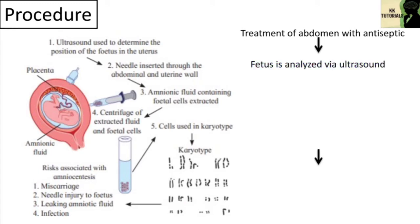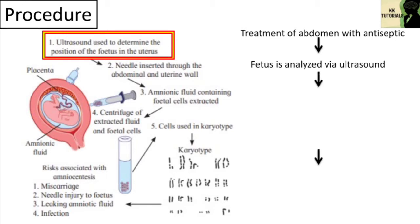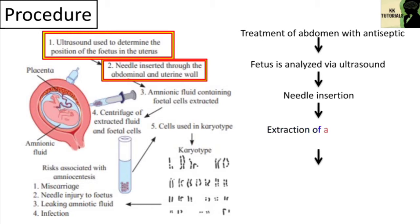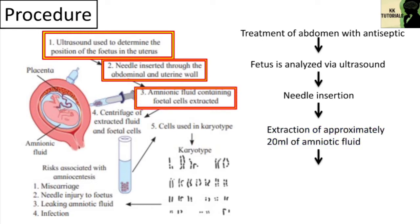With the aid of ultrasound guidance, a needle is inserted through the mother's abdominal wall, then through the wall of the uterus, and finally into the amniotic sac. The physician then punctures the sac in an area away from the fetus and extracts approximately 20 ml of amniotic fluid.